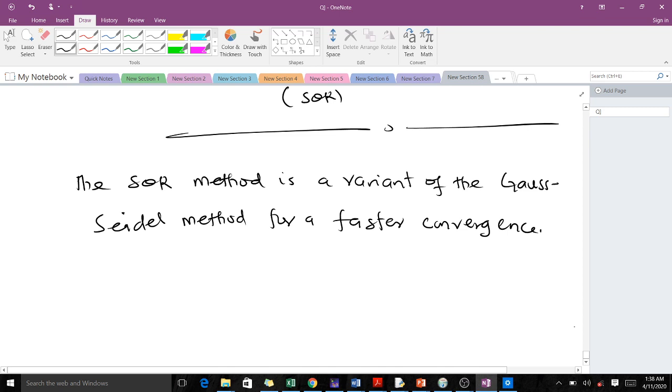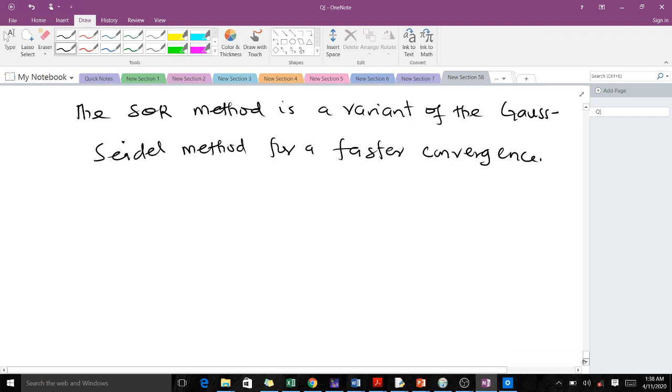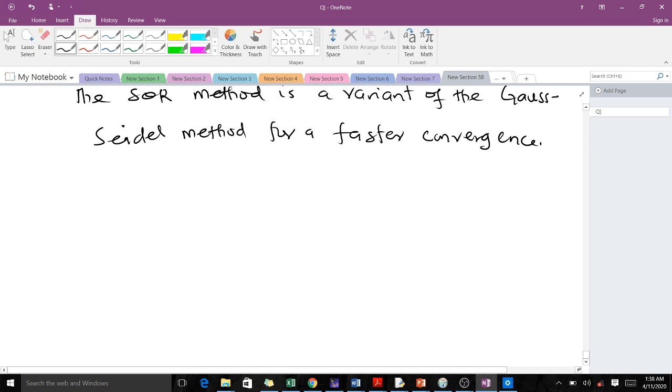When you talk about the successive over relaxation method, it's a variant of the Gauss-Seidel method for a faster convergence. What this definition means is that when you take the SOR, the SOR is just the same as the Gauss-Seidel which has been imposed with a weight.